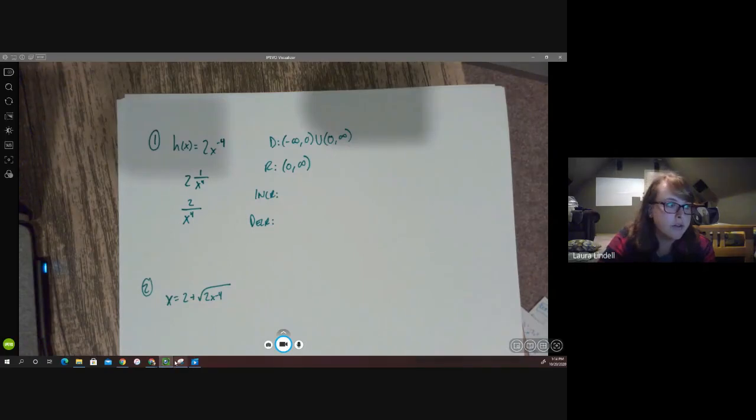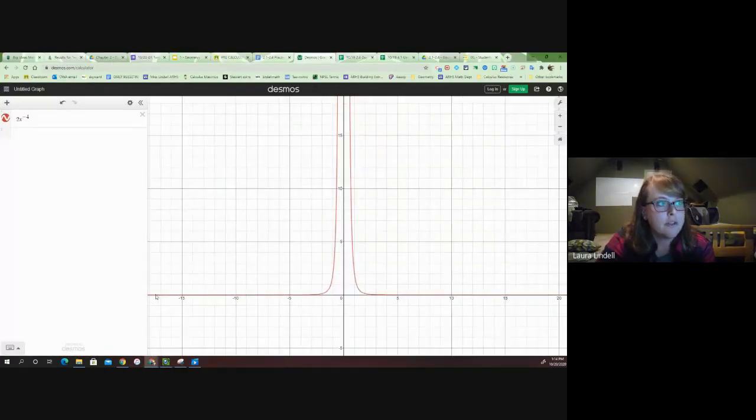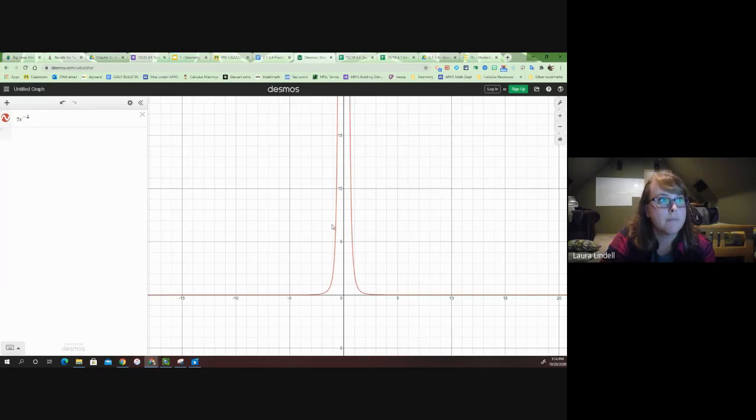Then we want intervals of increase when this roller coaster is going up the hill. So if I start over here, notice we are increasing very, very slowly. Increasing, and then we start increasing very, very quickly. And increasing and increasing and increasing. And it doesn't start decreasing until we jump over past the asymptote. So from negative infinity up to zero, this function is increasing. For x values, negative infinity to zero.